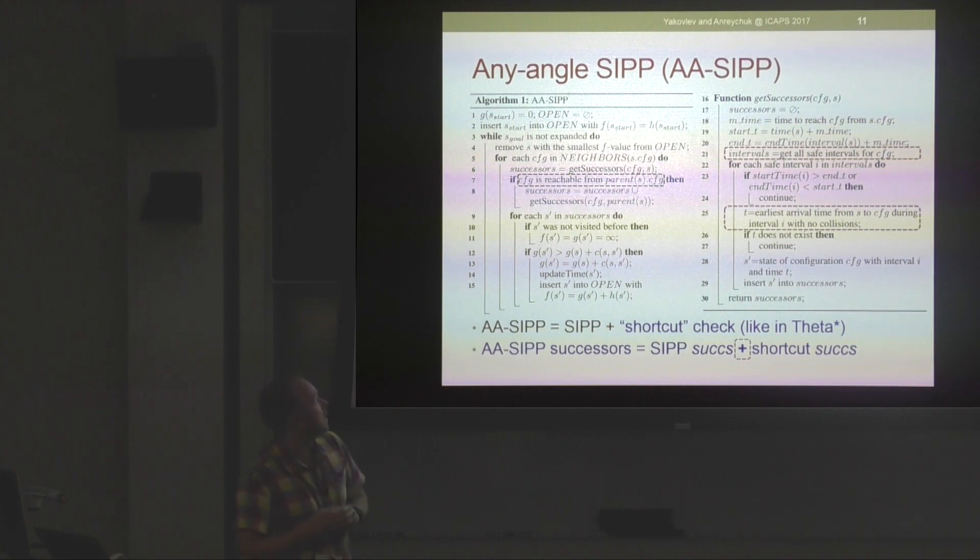The core difference between any-angle SIPP and regular SIPP is those two lines of code highlighted in blue. What any-angle SIPP does actually, after getting the regular successors, any-angle SIPP tries to validate so-called shortcut moves. Suppose we're expanding some cell and there is a neighbor. We try to figure out if the move is possible from the parent of the cell we're expanding directly to the neighbor, and if such move is feasible, we generate the corresponding successors as well and add them to the OPEN list.